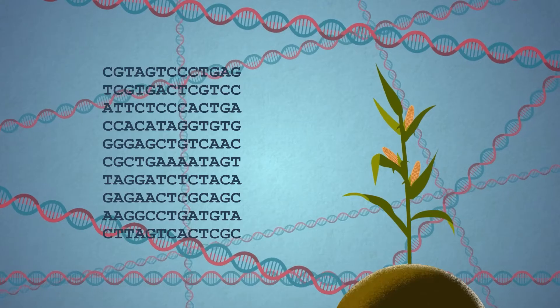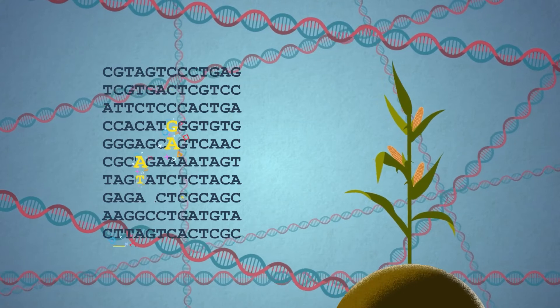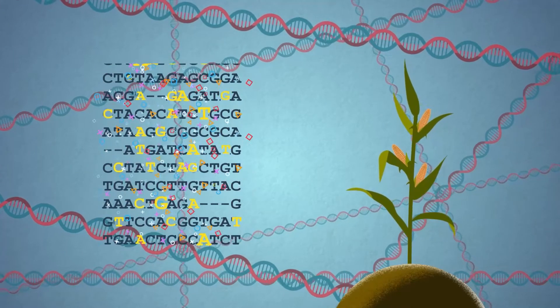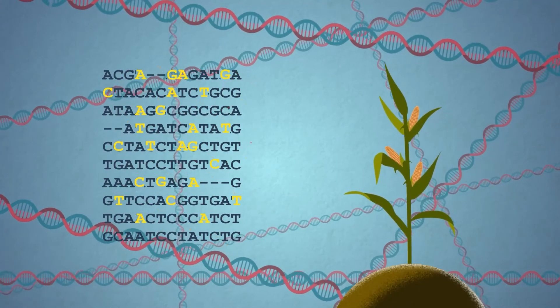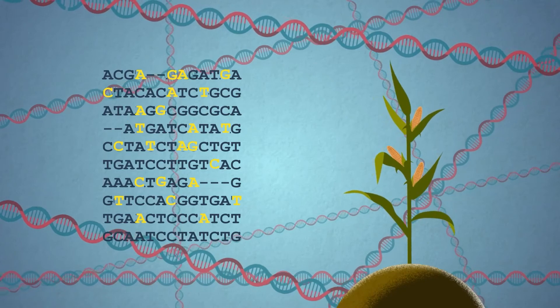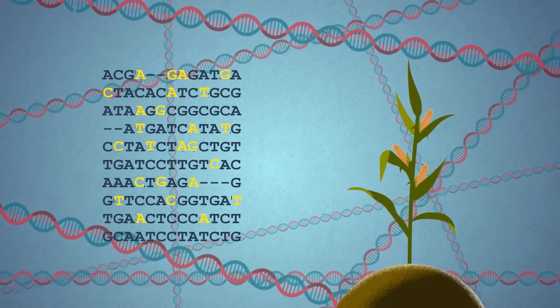In mutagenesis, seeds are exposed to chemicals and radiation. This results in thousands of undirected and unpredictable genetic changes — fewer than in traditional plant breeding, but still a lot.